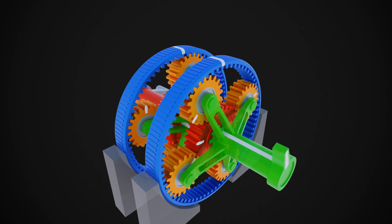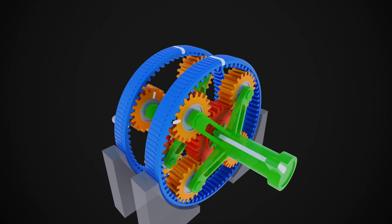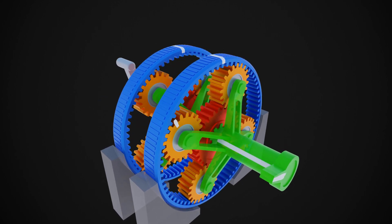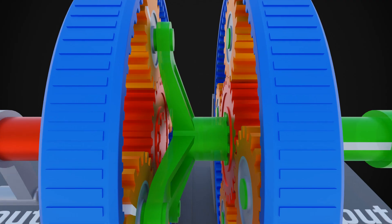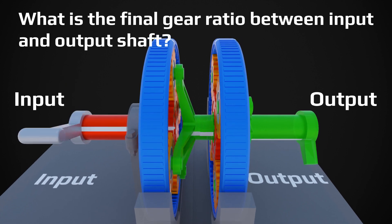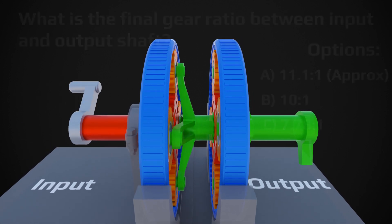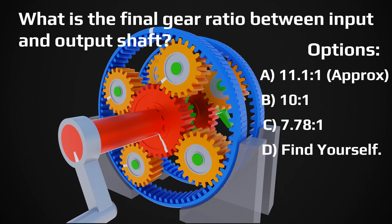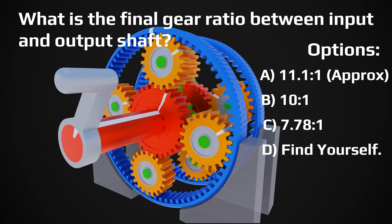Now it is a two-stage planetary reduction setup with same teeth designed for both reduction stages. Can you guess the gear ratio here between input and final output? Press the like button and write the answer in the comment box. Thank you for watching.